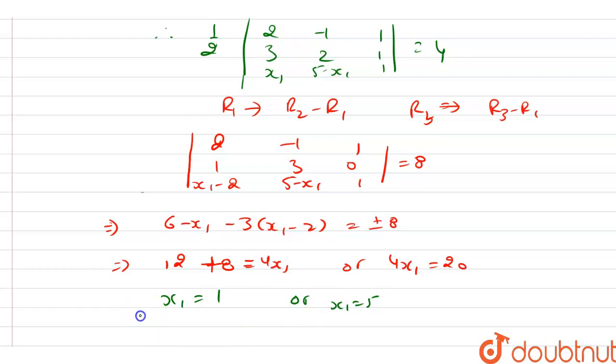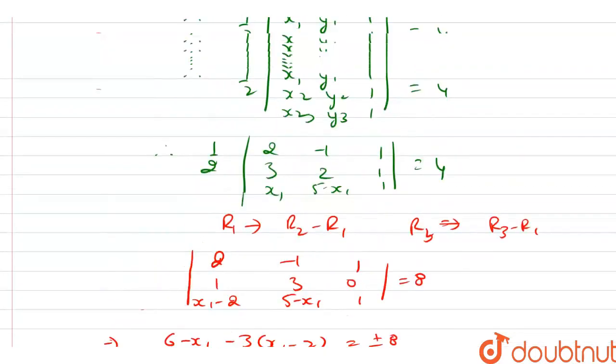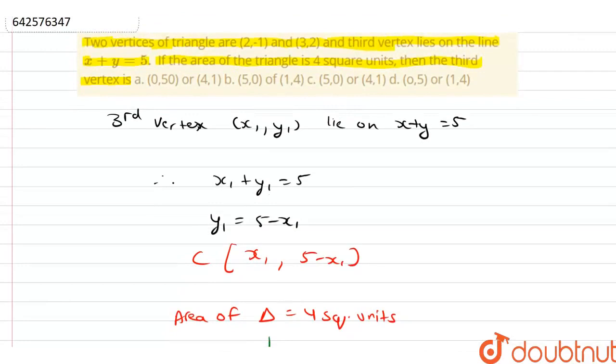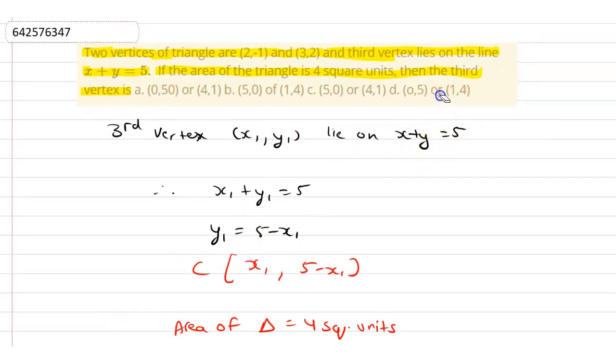Therefore, y1 = 5 - 1 = 4 or y1 = 5 - 5 = 0. The coordinates of C are (1, 4) or (5, 0). Looking at the options, the correct answer is option C. Thank you.